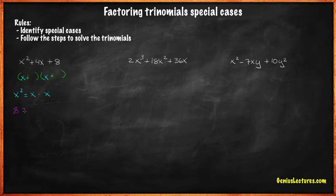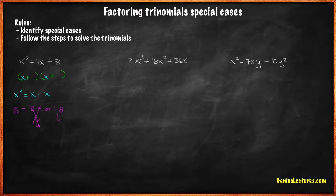We need to find two integers whose product is 8 and their sum is 4. Let's factor out 8: 8 equals 2 times 4, or 1 times 8. 2 times 4 equals 8, but 2 plus 4 is not equal to 4. 1 times 8 equals 8, but 1 plus 8 is not equal to 4. There are no integers whose product is 8 and their sum is 4.